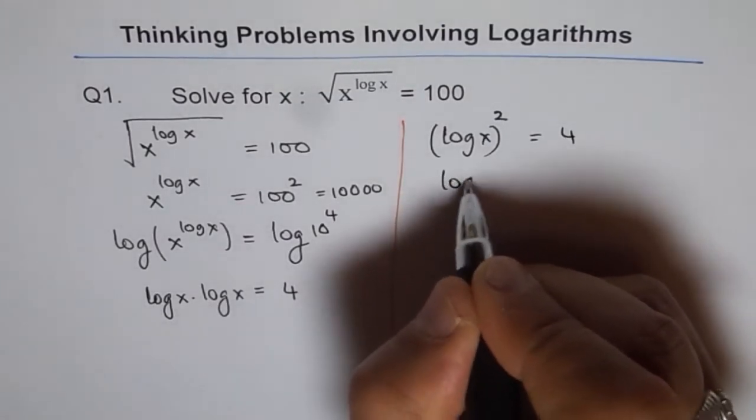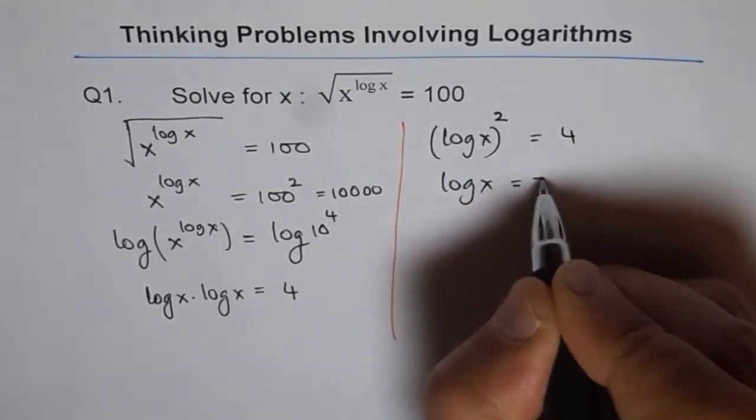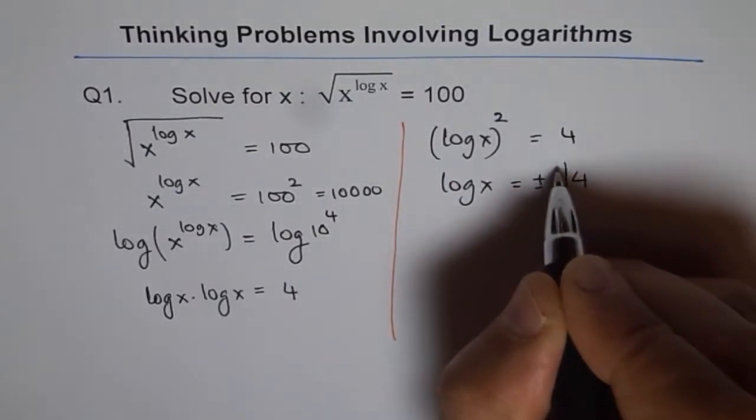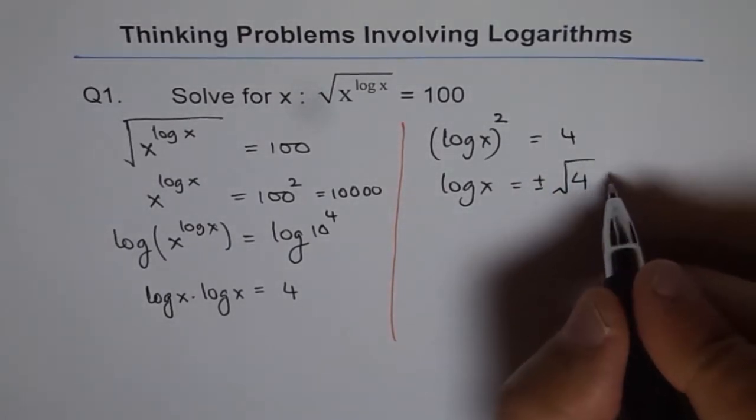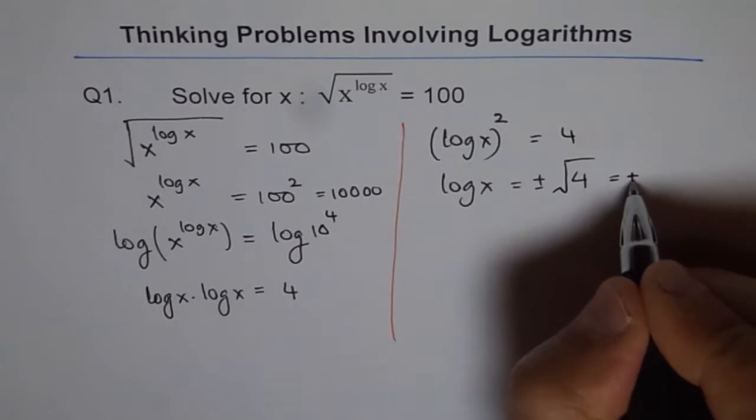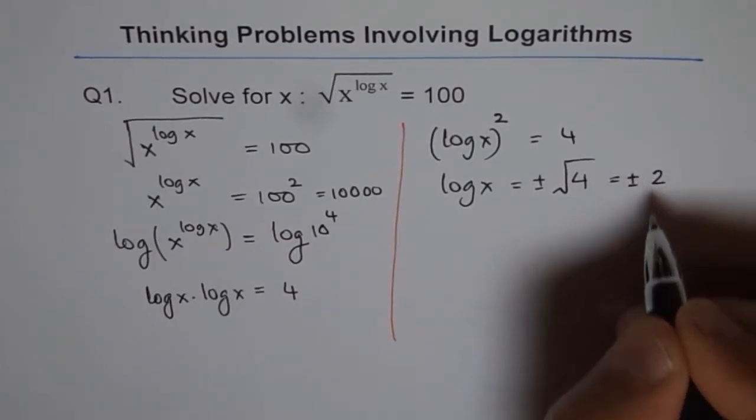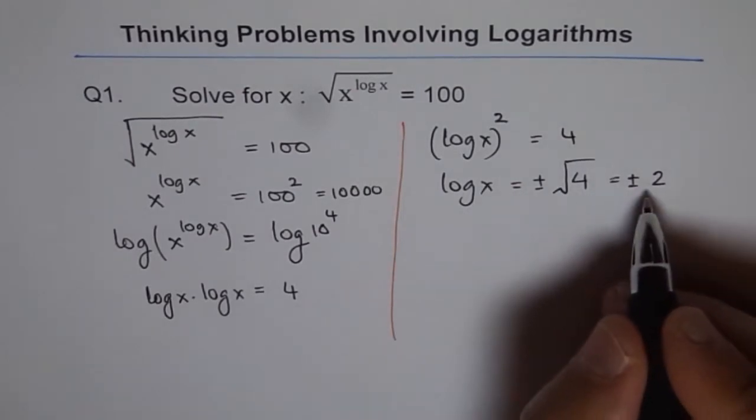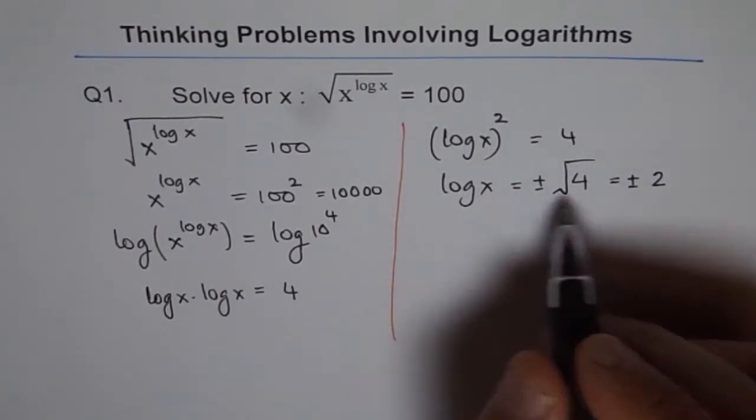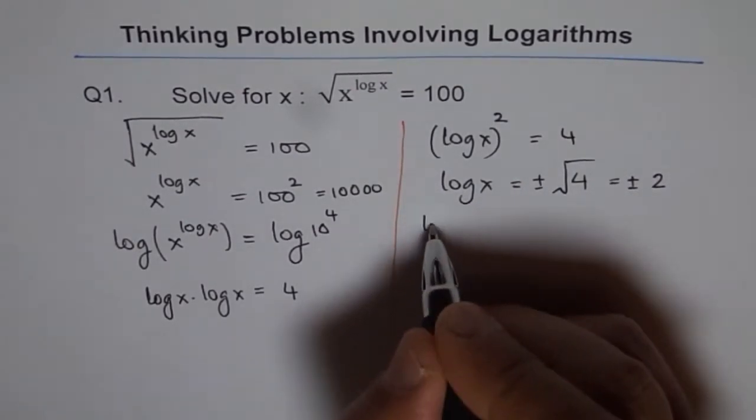And that gives us log x equals plus or minus square root of 4, which is plus or minus 2. So here we get two solutions: one is plus 2 and one is minus 2. So let's solve for both.